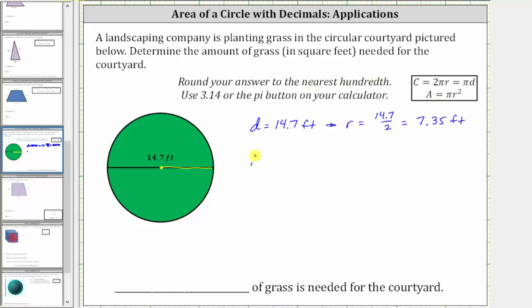The area is equal to pi r squared, where r is equal to 7.35 feet, and therefore the area is equal to pi times the square of 7.35 feet.